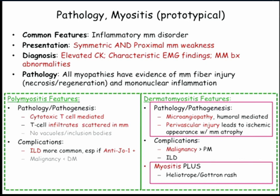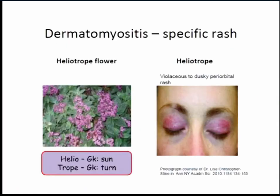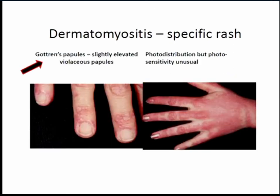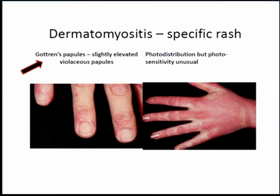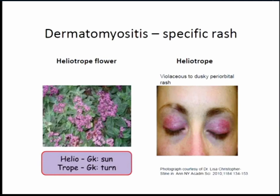Dermatomyositis also has dermatologic involvement. If they want you thinking about dermatomyositis, they'll give you the rash — you just have to recognize the description. The heliotrope rash — helio meaning sun, trope meaning turn, it turns toward the sun — is a violaceous, dusky, periorbital rash. Gottron's papules seem to be the more common board question: elevated violaceous papules, or a photodistribution violaceous rash.